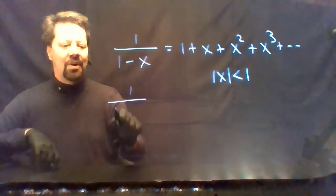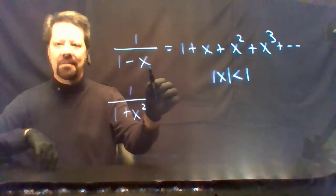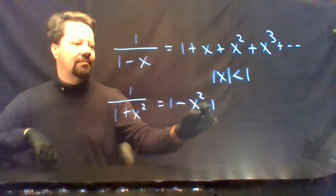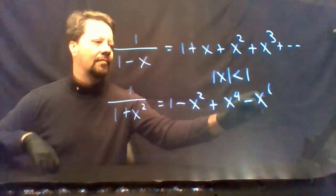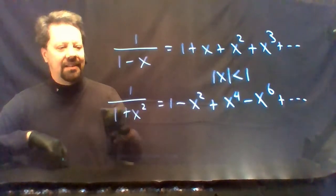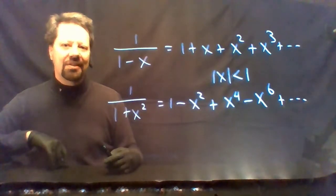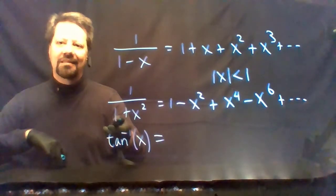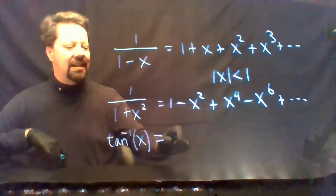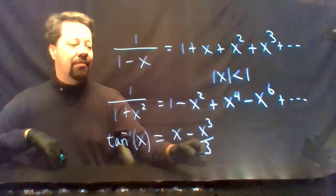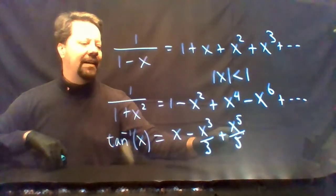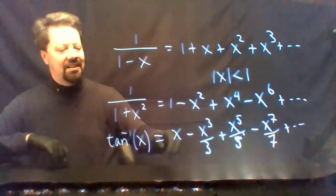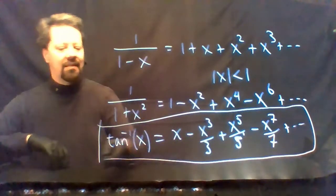Additionally, 1 over 1 plus x squared is like evaluating the previous Maclaurin series by replacing x with negative x squared. If we integrate a series, we can obtain the Maclaurin series for the antiderivative. In particular, the integral of 1 over 1 plus x squared is arctan of x, giving x minus x³/3 plus x⁵/5 minus x⁷/7 and so on — the Maclaurin series for inverse tangent.